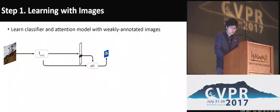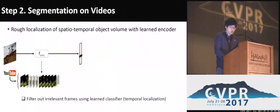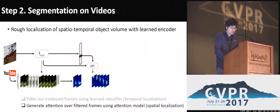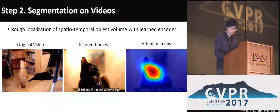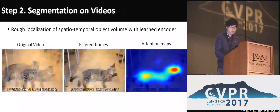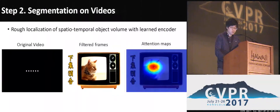Our training process begins with learning a multi-label classifier and attention model with weakly labeled images. Then, for each web-crawled video, we apply the classifier to filter out irrelevant frames. For the remaining frames, we compute the attention map that highlights the distinguishable target object area from surrounding background and distractors. The frame filtering and attention provide rough localization of the object in the video, which significantly reduces the ambiguities in segmentation.